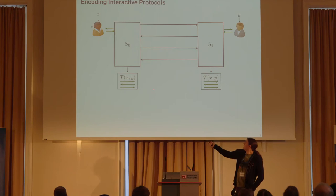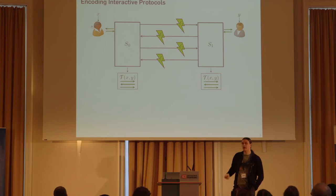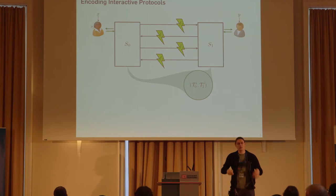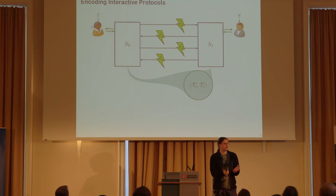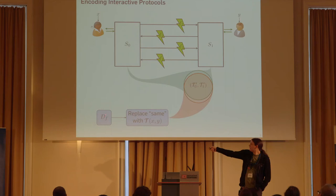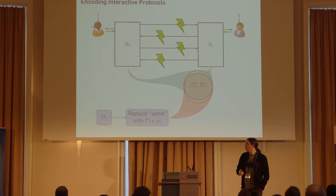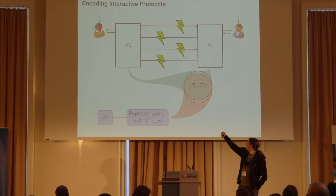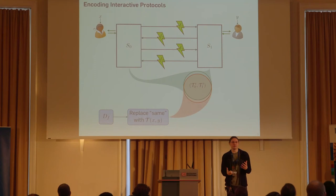Again, somebody could tamper with this protocol. A tampering function could try to change one or more of those messages. This means we get some output distribution from S0 and S1. We look at the joint distribution of their outputs and define non-malleability similarly to regular non-malleable codes: there exists some distribution we can sample, over a set containing the special symbol 'same'. If this symbol occurs, we replace it with the actual transcript that would have resulted from direct communication. This red distribution should be statistically close to the green distribution that results from actually tampering with the protocol. This is an interactive non-malleable code.